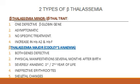The second type, beta thalassemia major, is also known as Cooley's anemia. In this case, both genes are defective and therefore clinical manifestations occur within a few months after birth. The baby becomes severely anemic, particularly in the first and second year of life. The erythrocytes are ineffective and skeletal changes are observed.